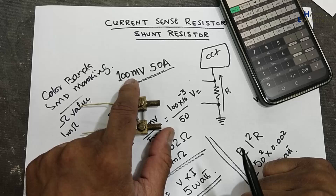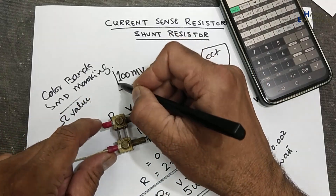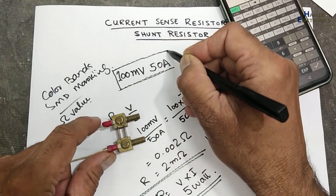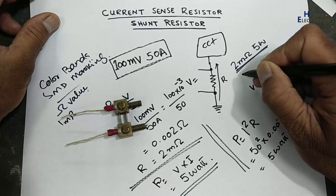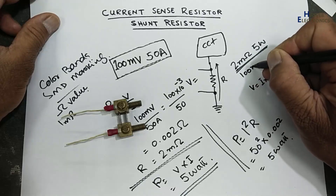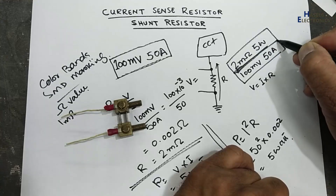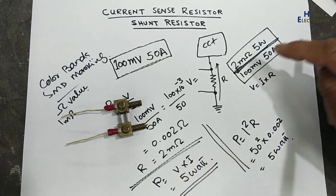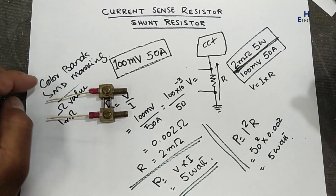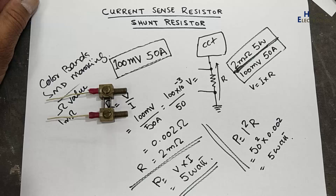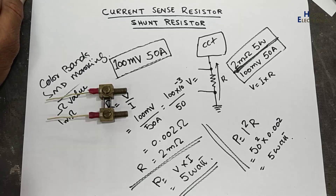To summarize, this resistor value is 2 milli-ohms, 5 watt — or we can say 100 millivolt at 50 ampere. I hope you enjoyed this video. If it is good, please give a thumbs up. If you have any questions, please write in the comments. Thanks for watching.